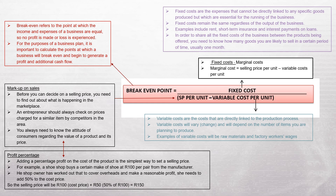Fixed costs are expenses that cannot be directly linked to any specific goods produced but are essential for running the business. Fixed costs remain the same regardless of the output of the business — examples include rent, short-term insurance, and interest payments on loans. Your fixed costs will not change no matter how many products you produce. Whether you are selling 100 items or 1,000 items, your rent stays the same. Marginal cost equals selling price per unit minus variable cost per unit.